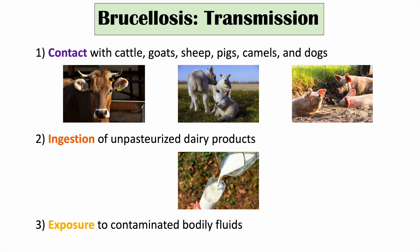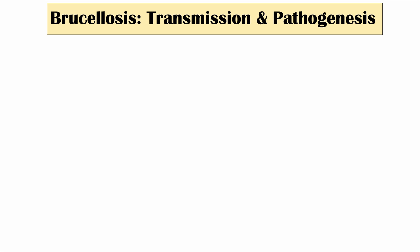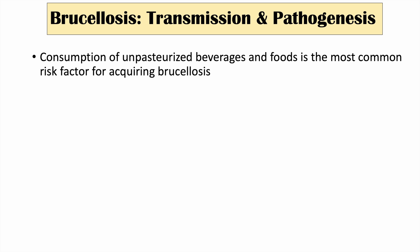Exposure to contaminated bodily fluids from animals or from infected individuals is another route of transmission. Consumption of unpasteurized beverages and foods — such as drinking unpasteurized milk — is actually the most common risk factor for acquiring brucellosis.